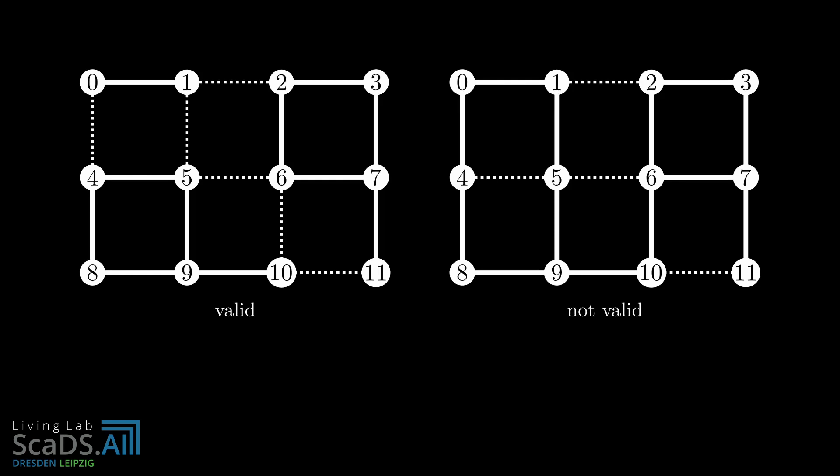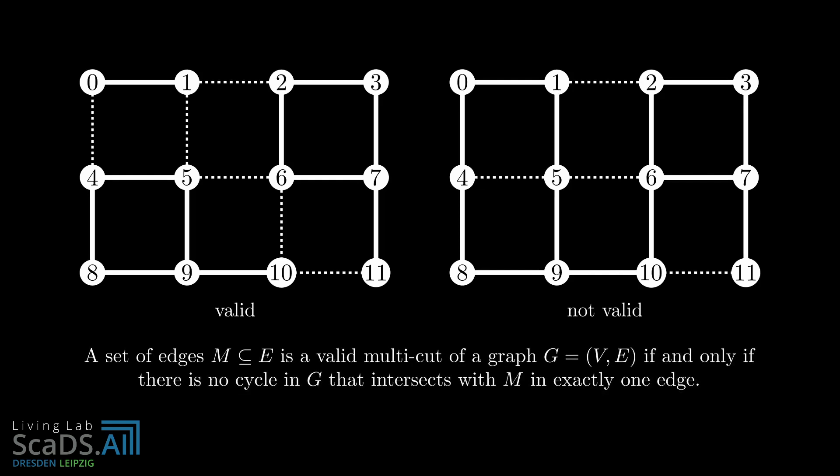We can formalize the notion of a valid multi-cut as follows. A set of edges is a valid multi-cut of a graph if and only if there is no cycle in the graph that intersects with a multi-cut in exactly one edge. The multi-cut on the left satisfies this condition. For example, the cycle along the nodes 4, 5, 9 and 8 does not intersect with the cut edges. Or this cycle contains two cut edges. Or this one 3. There does not exist a cycle which contains precisely one cut edge. Because as soon as you cross one cut edge, you move into a new component and to close the cycle you have to cross at least one more cut edge to get back to the original component.